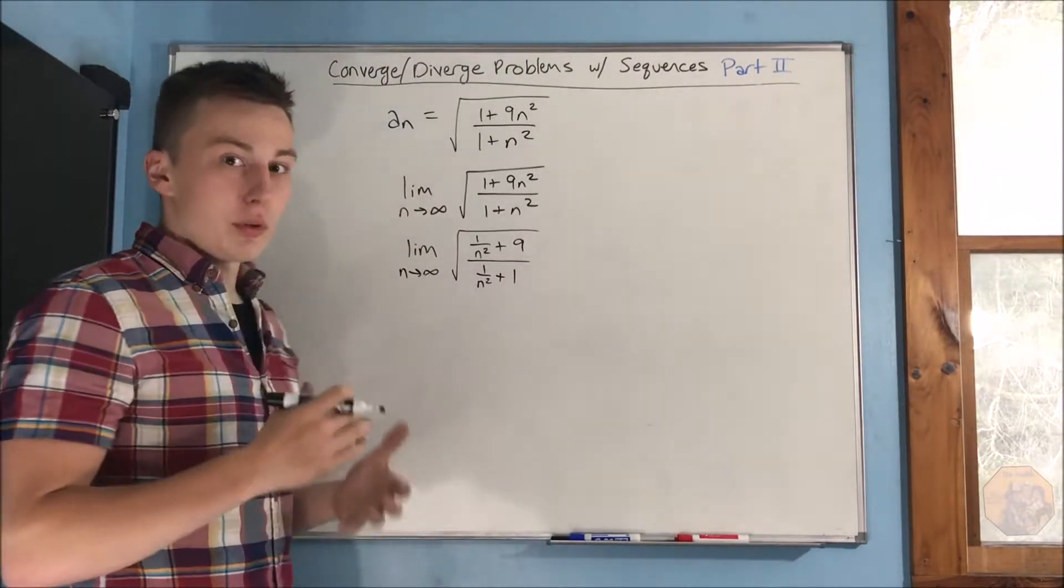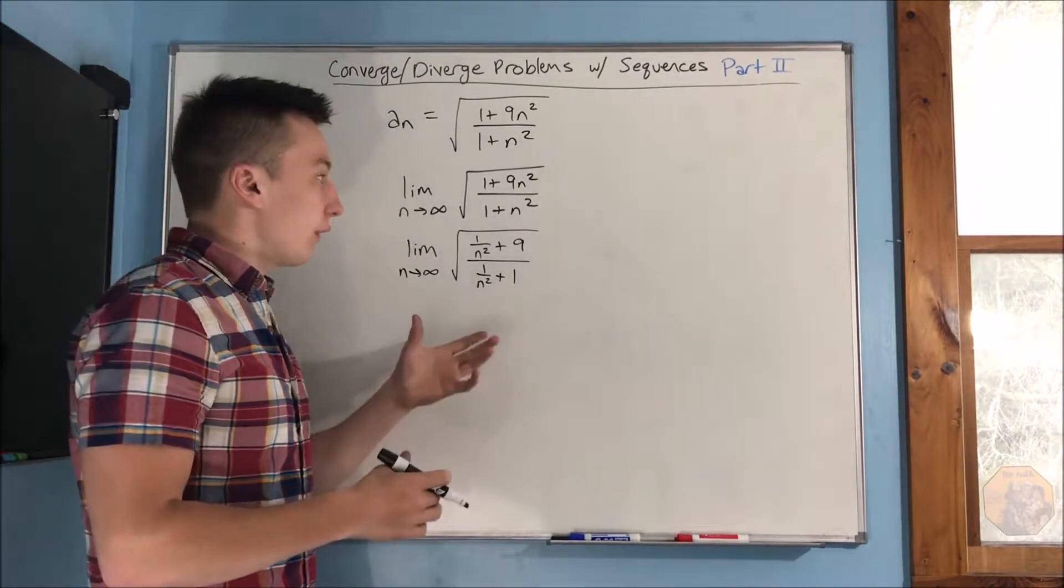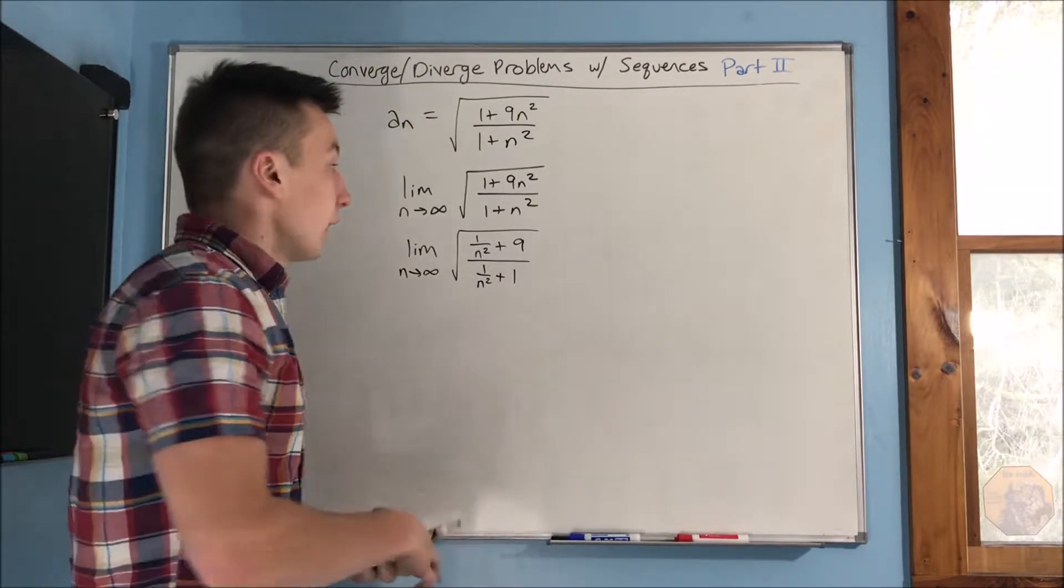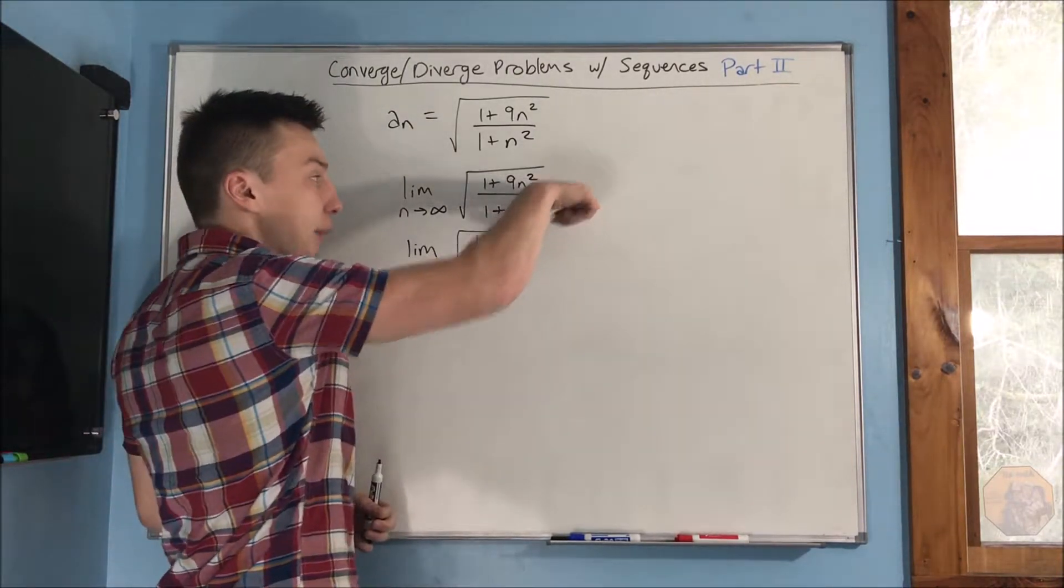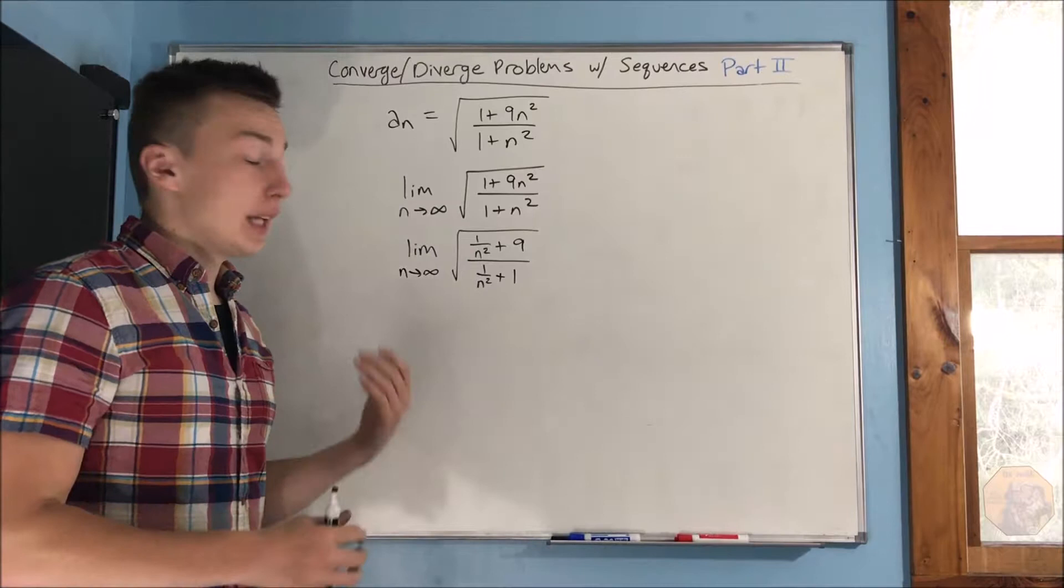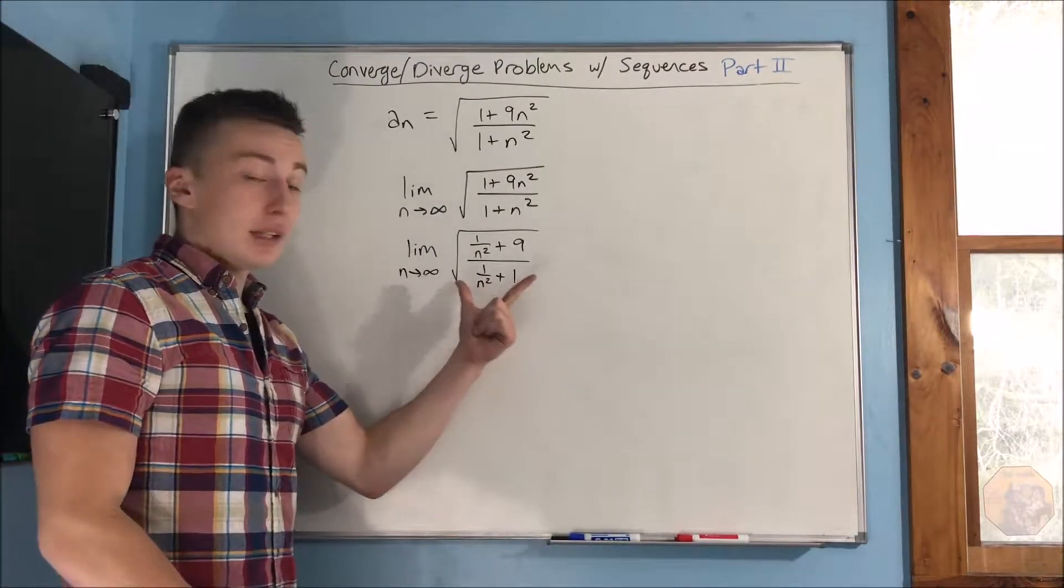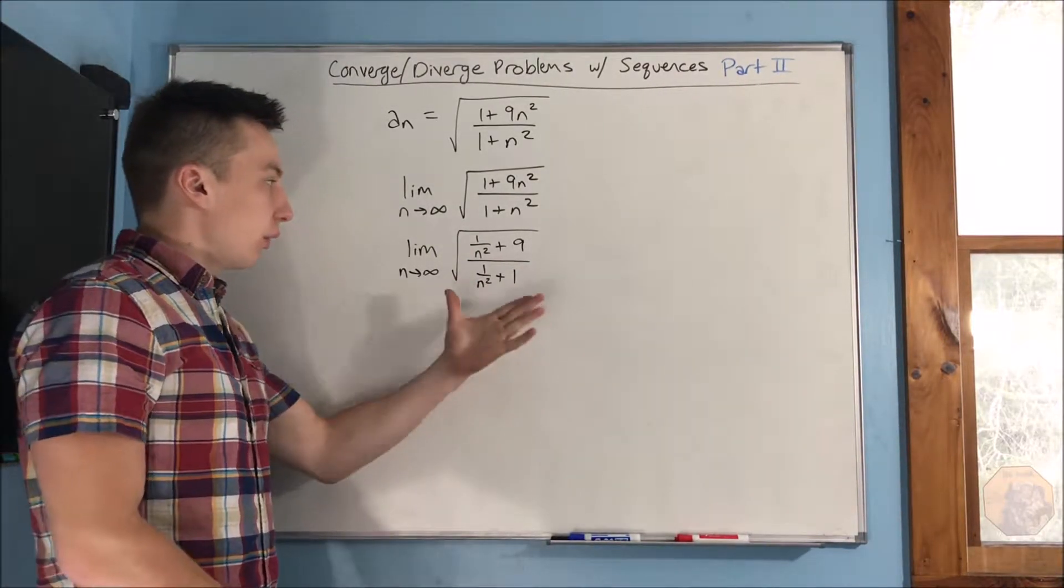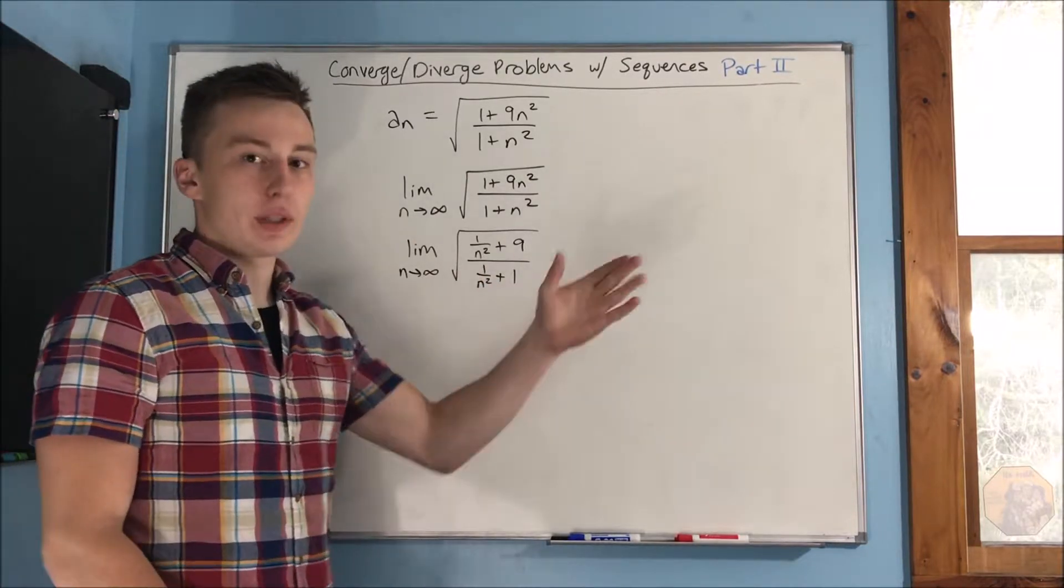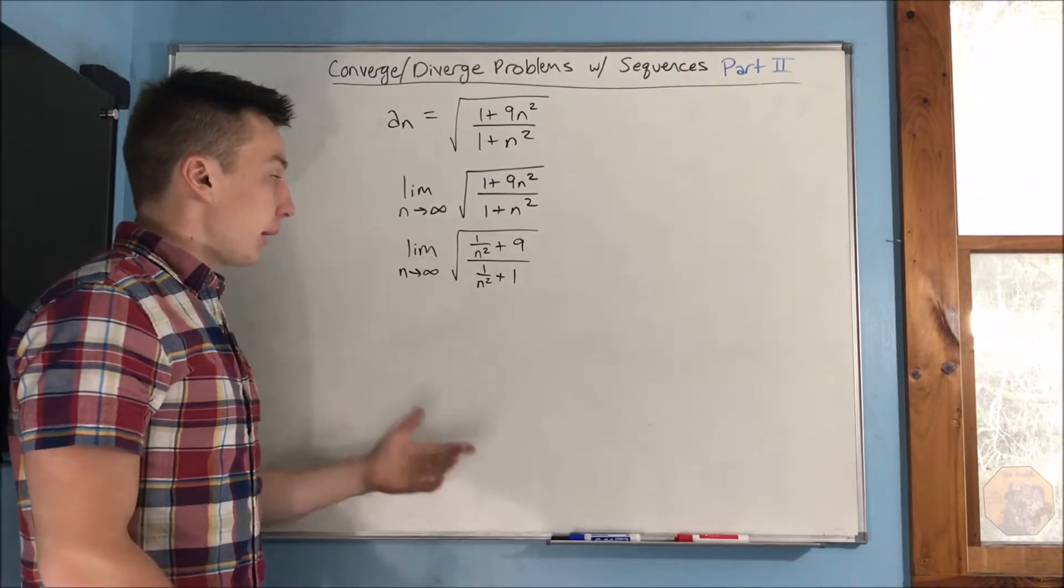Okay, you may be wondering, why did you divide by n squared? And that's because that's the highest power of n here is that n squared. So if we divide by it, now we get something that we can actually just look at and be like, okay, this is going to be what our limit is.